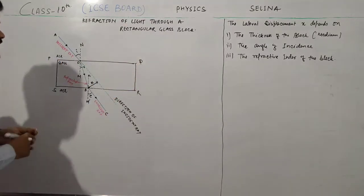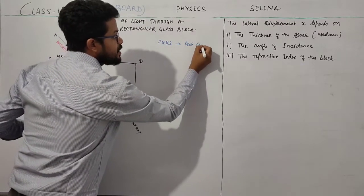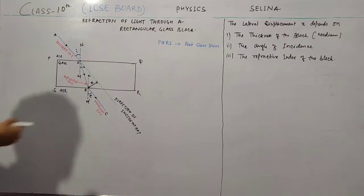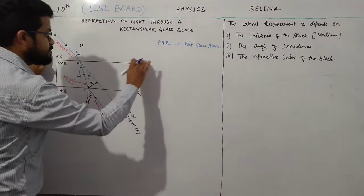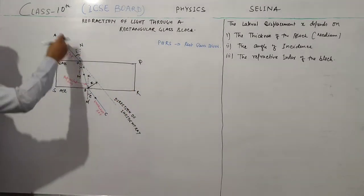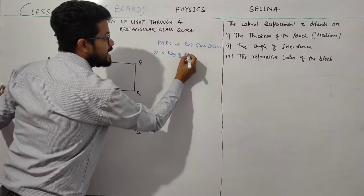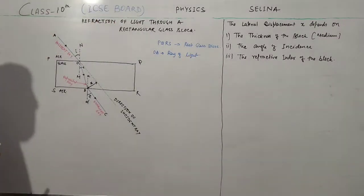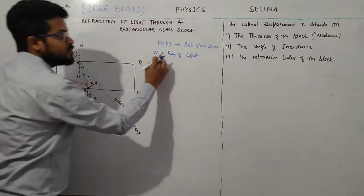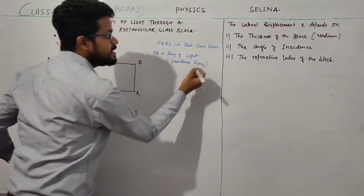Here, this is the rectangular glass block — P, Q, R, S is the rectangular glass block. This is the surface PQ and this is the surface SR. The ray of light OA is incident on the surface PQ.